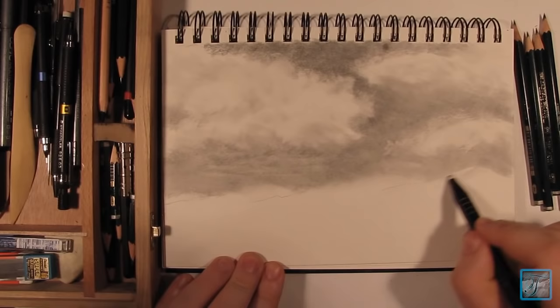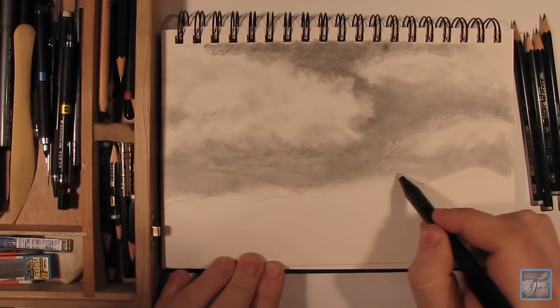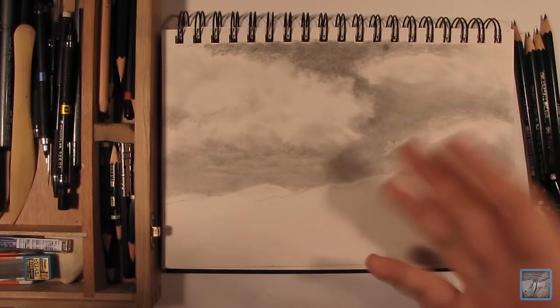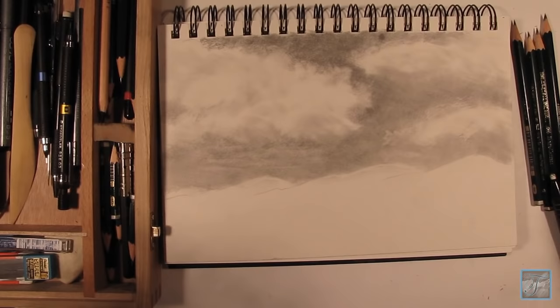And then usually at this point when I have the sky finished, then I'll go back in with the mountains and I'll erase out where I've gone over them like this, just to kind of reestablish that line again. Something like that. And then this is where I would take it and go and start doing the rest of the drawing.